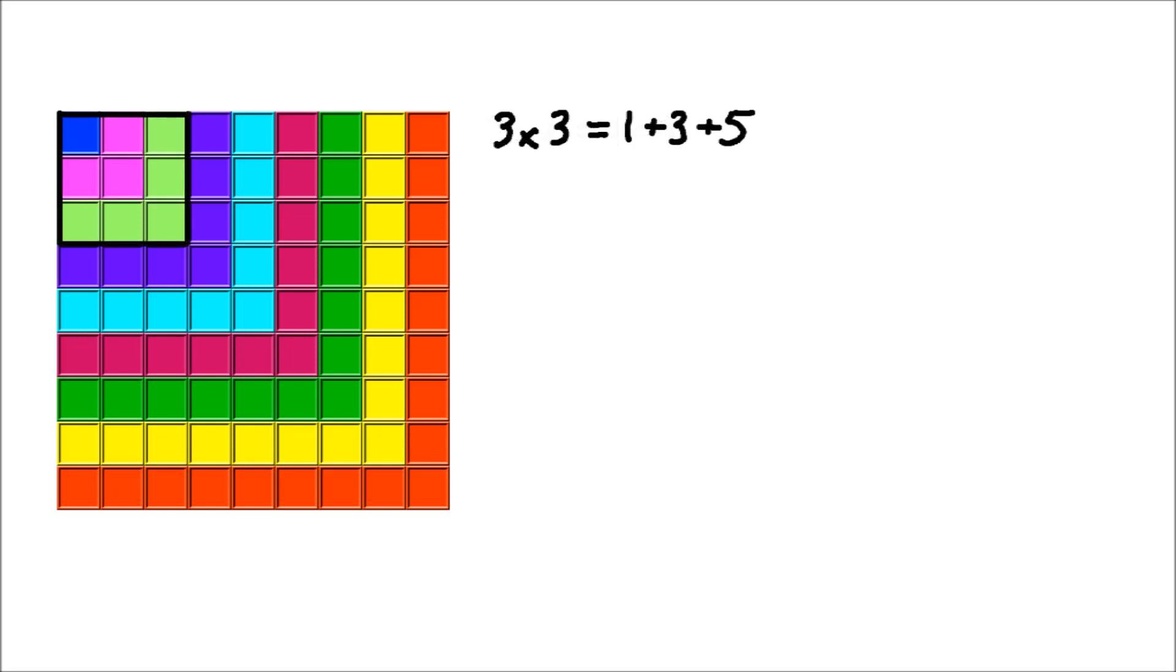Then I added on 5 lime green tiles to get a 3 by 3 square. And you can see that 3 times 3, which is 9, is also 1 plus 3 plus 5.